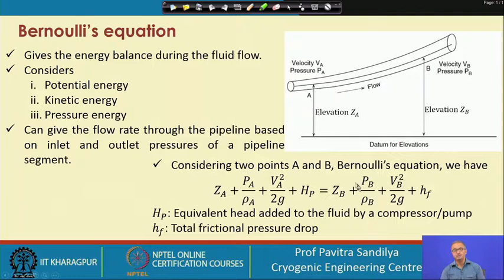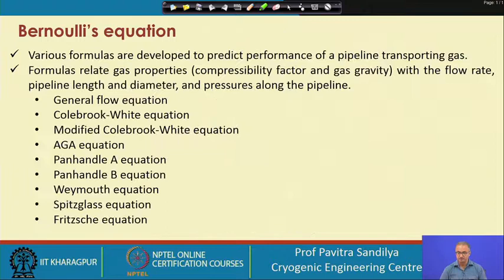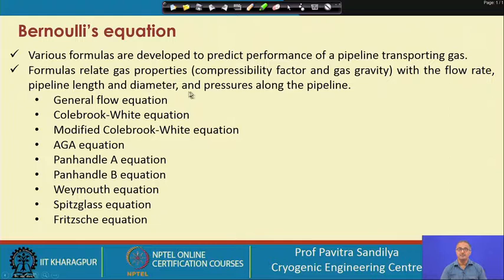Writing the Bernoulli's equation: the first term signifies potential head, the next is pressure head, the next is kinetic head, and H_P is the equivalent head added to the fluid by the compressor. On the outlet side we again have potential head, pressure head, kinetic head, and the frictional losses during flow. This energy balance equation is used repeatedly to find out the pressure loss in the pipeline. Various formulas developed from Bernoulli's equation use gas properties like compressibility factor, gas gravity, flow rate, pipeline length, diameter, and pressure along the pipeline.